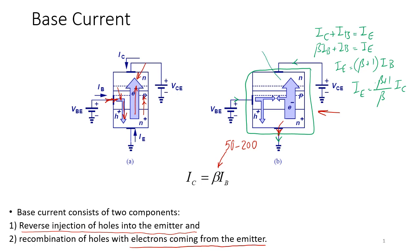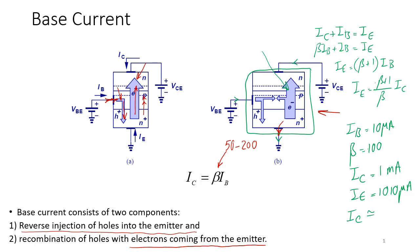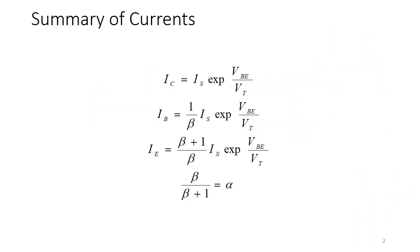We can also write Ie = (β+1)/β · Ic. You can see that Ic and Ie are both pretty large. For example, if beta is 100 and Ib is 10 microamps, then Ic is 1 milliamp and Ie is 1010 microamps. Since beta is a large number, (β+1)/β ≈ 101/100, so Ic and Ie are nearly equal. The emitter current is always the largest — it equals the sum of the collector and base currents.